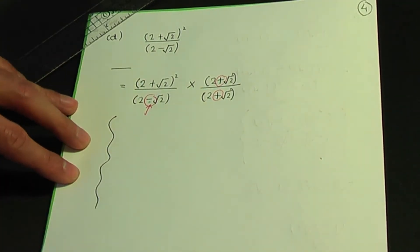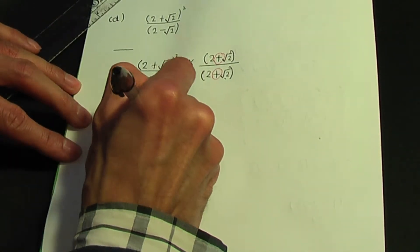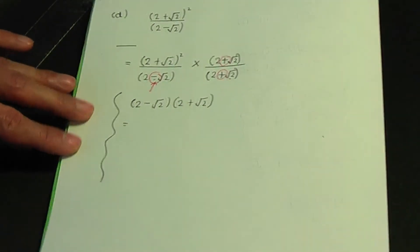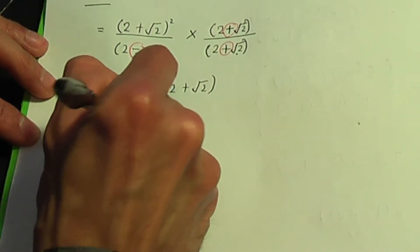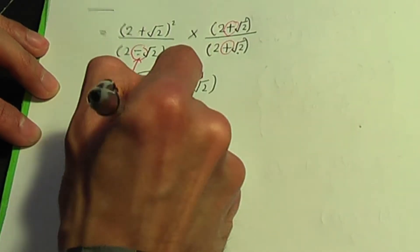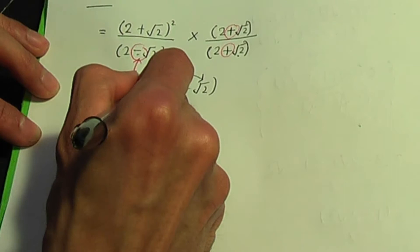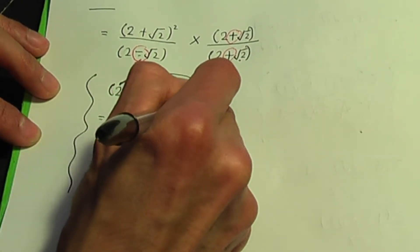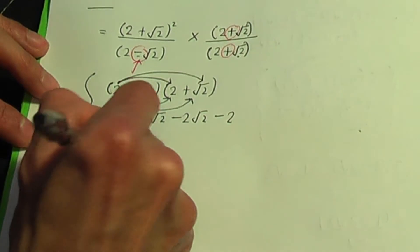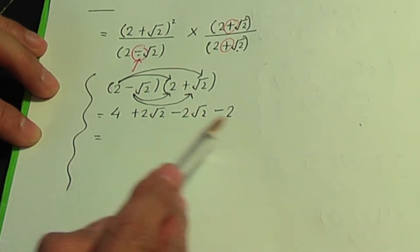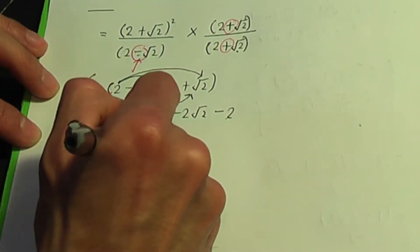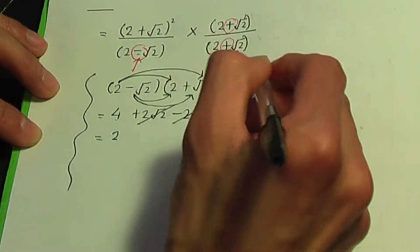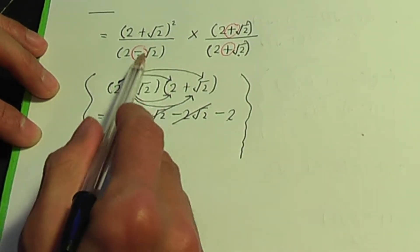Let's do a side calculation for the bottom pair: two minus root two multiplied by two plus root two. Two times two is four, two times root two is two root two, minus root two times two is minus two root two, and minus root two times plus root two is minus two. Adding like terms: four minus two is two, and the two root two terms cancel. So the bottom pair gives two.